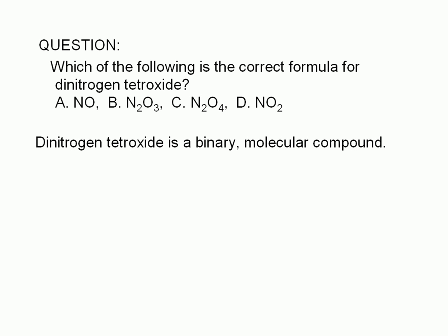Dinitrogen tetroxide is a binary molecular compound. By binary, we mean that it is made up of only two elements, in this case nitrogen and oxygen.